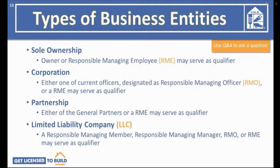Before applying, determine what type of entity your business will be. There are four types. First, a sole ownership, where the owner or responsible managing employee may serve as the qualifier — about two-thirds of California contracting businesses are sole ownerships. Second, a corporation, with just under one-third of licensees. Third, a partnership at 2% of licensees. Finally, a limited liability company (LLC) at about 1.5% of California construction companies.